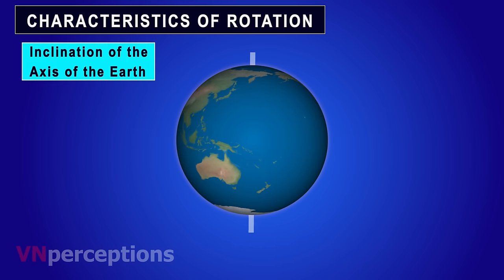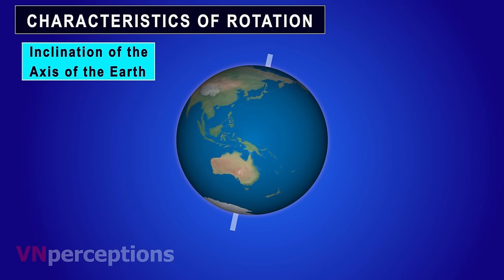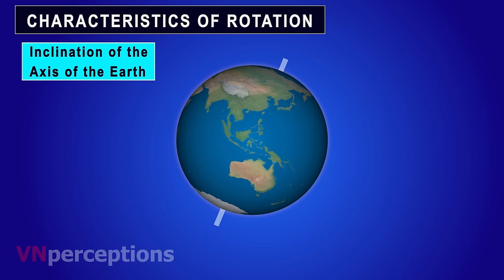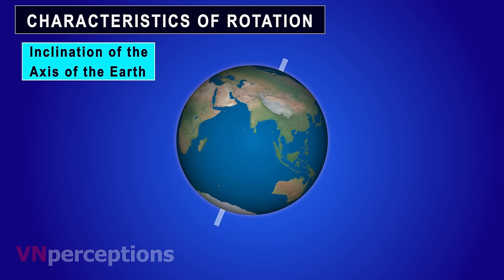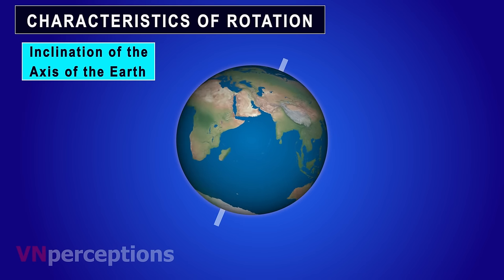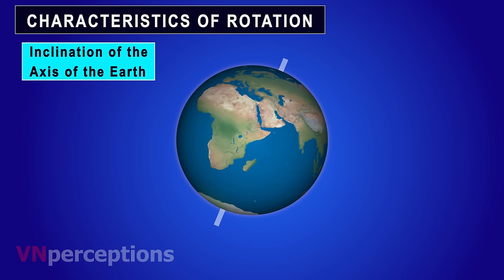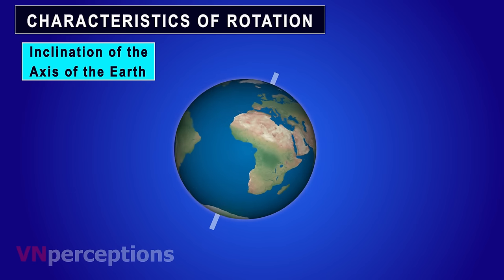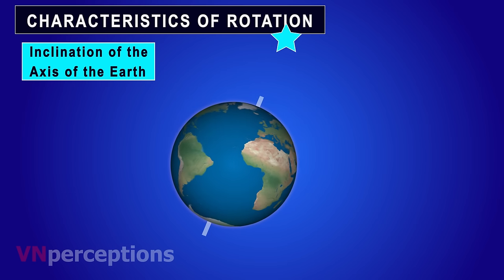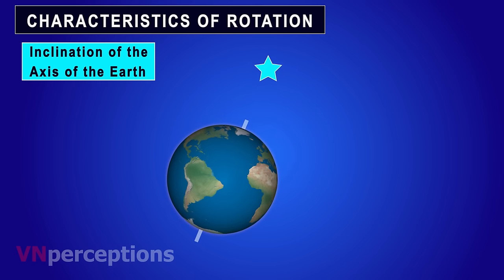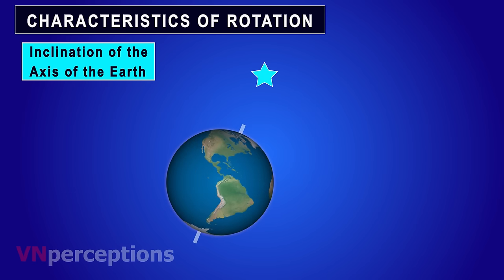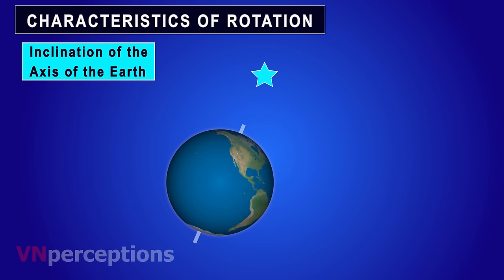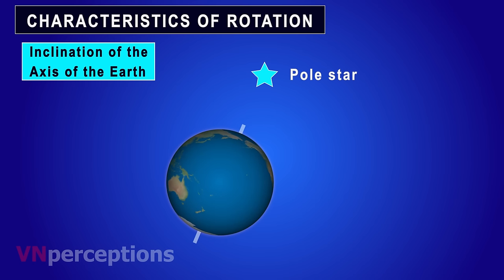The second characteristic is inclination of the axis of the earth. The earth is always tilted in the same direction — that is, it is pointing towards the pole star. Its north pole is pointing towards the pole star as it is moving around the sun.